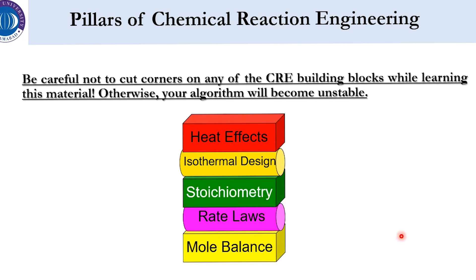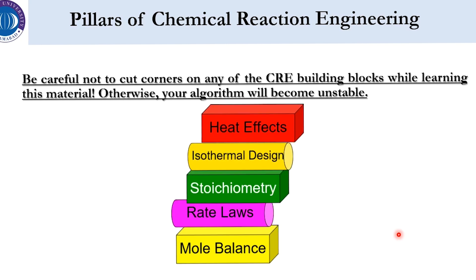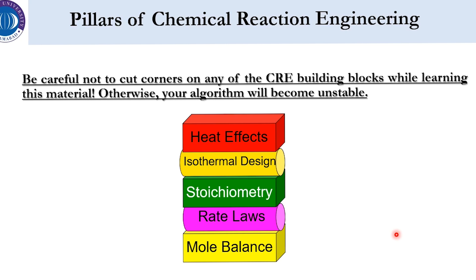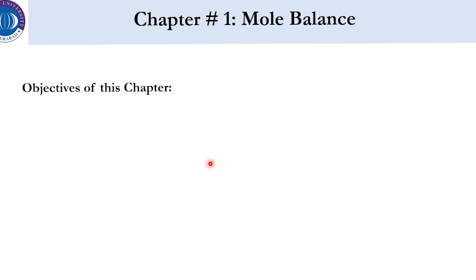You should not cut the edges of the building blocks, because cutting the edge means you have a weaker concept or consider something unnecessary. Do not consider any single concept as unnecessary, because it will lead to the falling of the building. All blocks should be properly aligned and all concepts properly grasped. For example, mole balance — which we start today — should be completely understood before moving to rate law, and so on through stoichiometry up to the isothermal and non-isothermal designs.